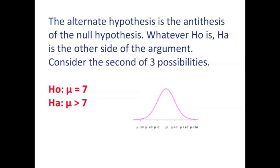Now, we're going to consider the second of three possibilities. And that is the null hypothesis being mu equals 7, and the alternate hypothesis being mu is greater than 7.